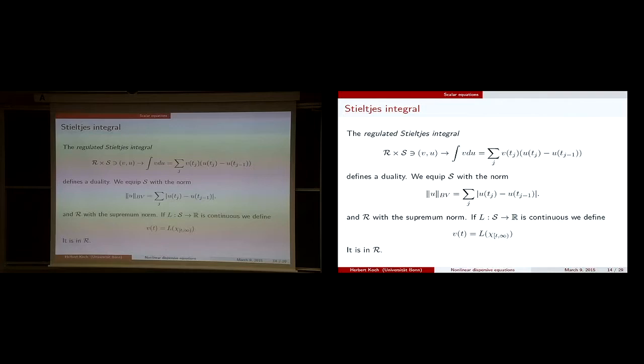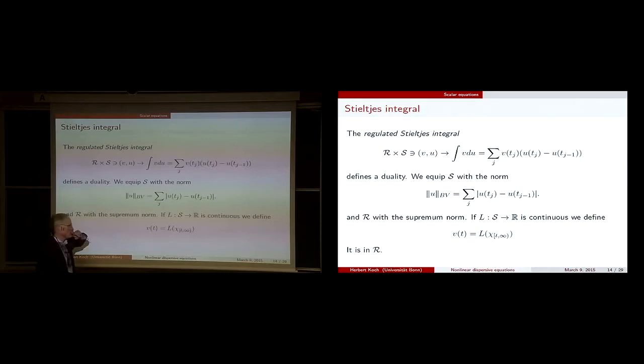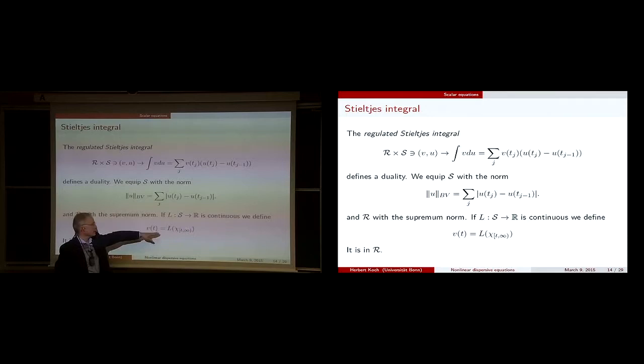We equip the right continuous functions with the BV norm — which for step functions is simply the sum over the steps — and equip the regulated functions R with the supremum norm. If you have a linear continuous map from the right continuous functions to R, then we can define V(t) as L evaluated at this step function (the characteristic function). This gives a representation for this linear map.